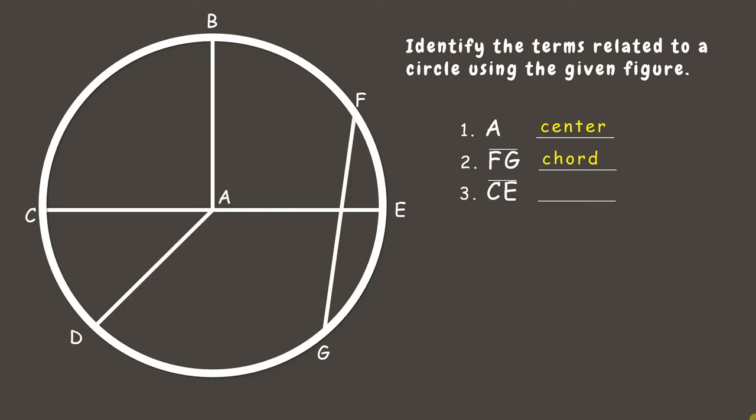Next is line segment CE, which is a chord that passes through the center. So it is called a diameter.